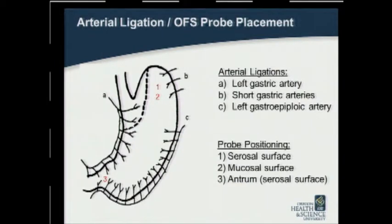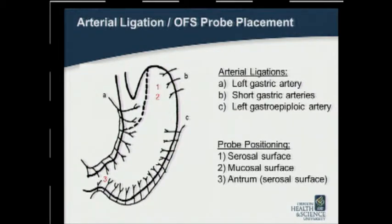Our experiment was carried out in two parts in a 40-kilogram female Yorkshire swine. In the first part, spectroscopy probes were placed on the serosal surface of the fundus, on the mucosal surface of the fundus via a small gastrotomy, and at the antrum. Spectroscopy measurements were then obtained at each location following serial ligation of the short gastric, left gastroepiploic, and left gastric arteries.